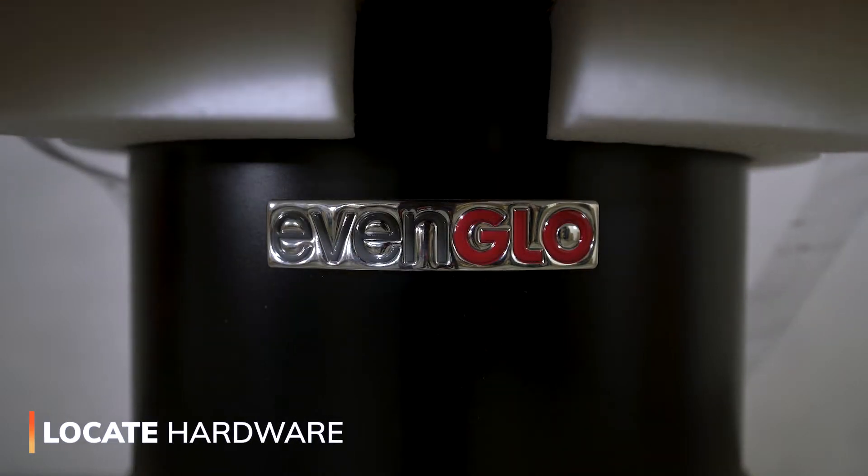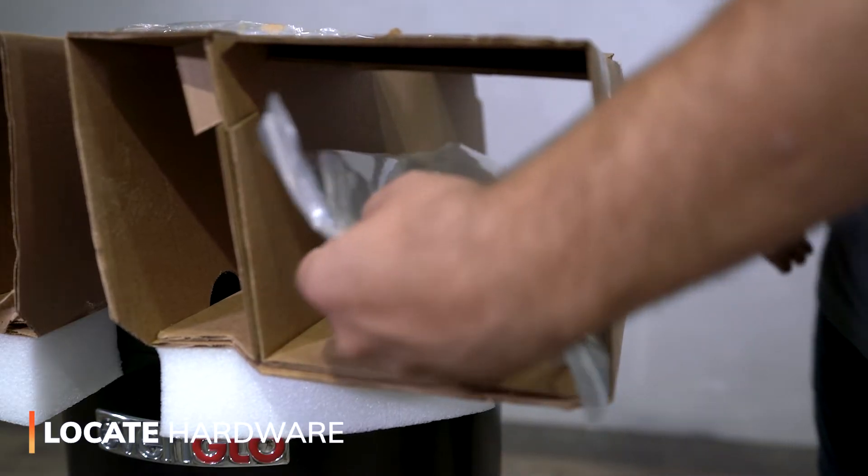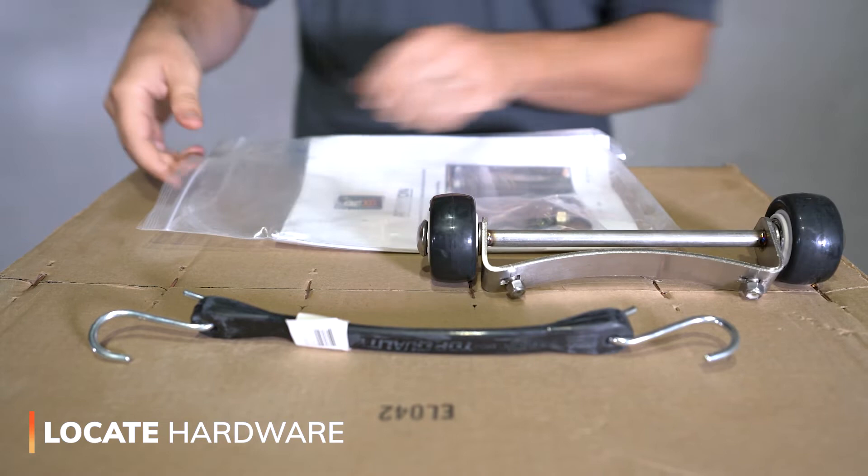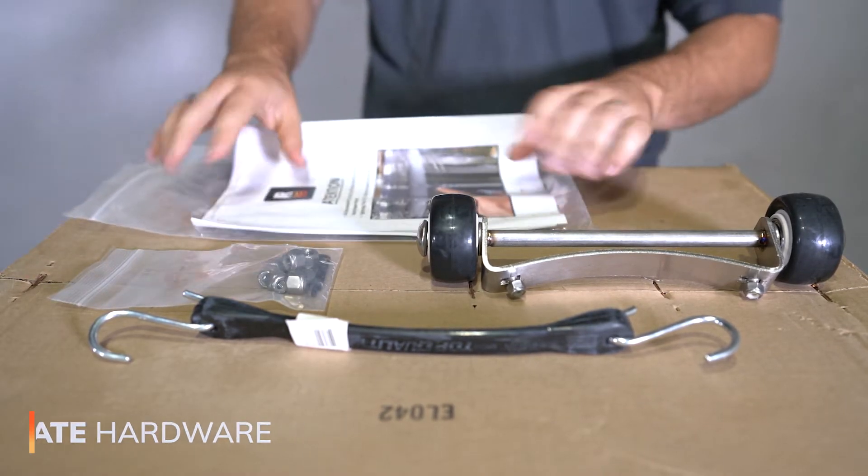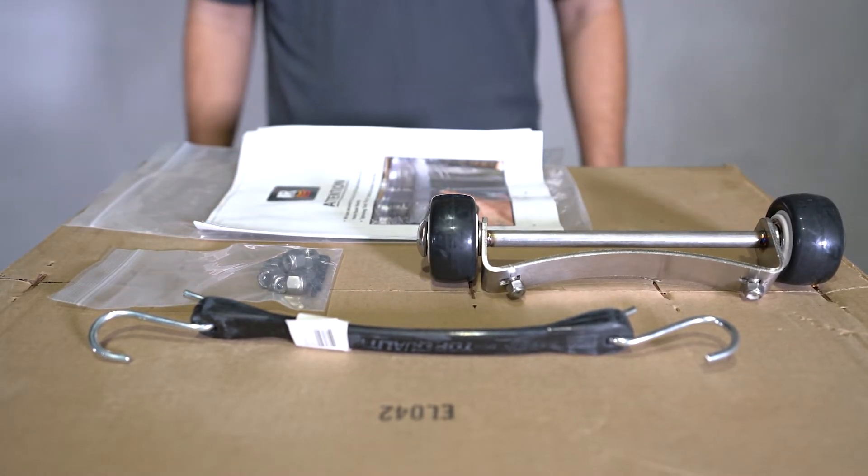First, we will locate the main hardware bag inside the packaging. In this bag, we'll find a bungee cable, the wheel assembly, the hardware needed for our heater, and the owner's manual. We'll set these items aside as we'll need them later.